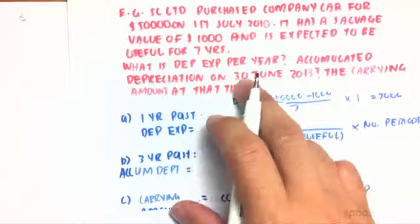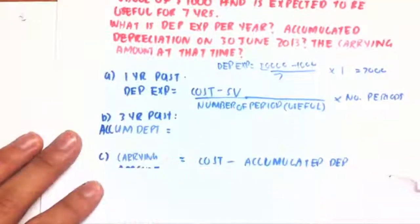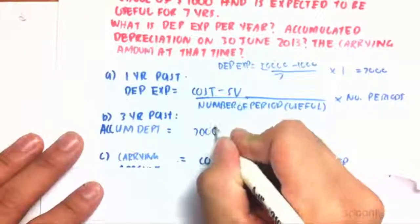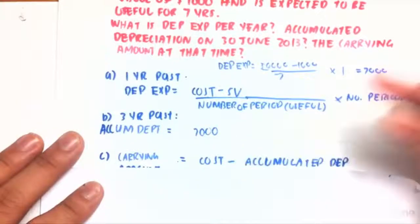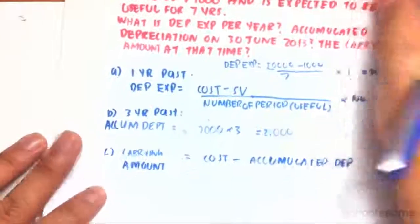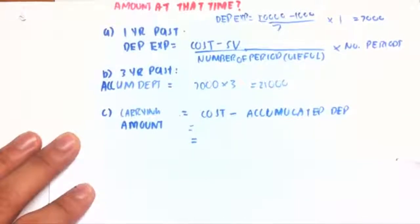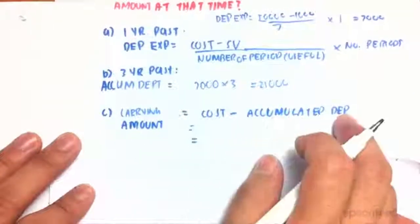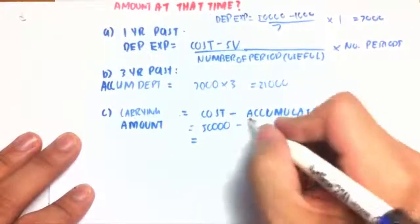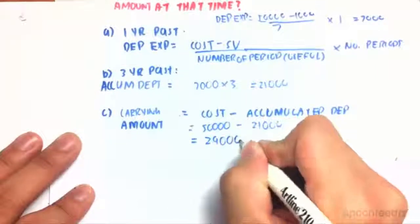On the 30th of June 2013, three years have passed. The accumulated depreciation would be $7,000 times three, which equals $21,000. The carrying amount at 30th of June 2013 is cost minus accumulated depreciation: $50,000 minus $21,000, giving a carrying amount of $29,000.